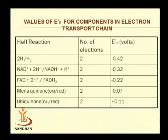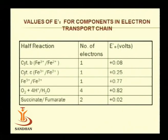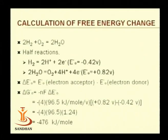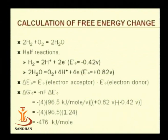The highest energy level remains with FAD and NADH, and the lowest energy level remains with oxygen — for oxygen the redox value is +0.82. By calculation of redox potential, we can very well calculate free energy change, which is helpful in understanding the bioenergetics of the cell.